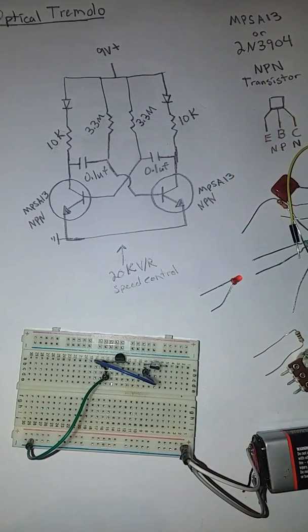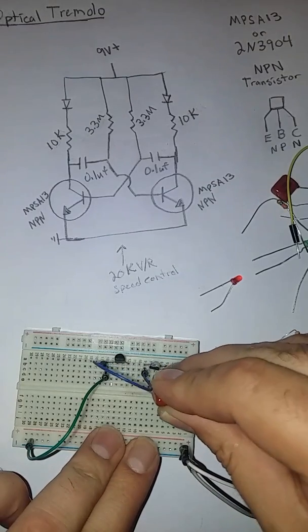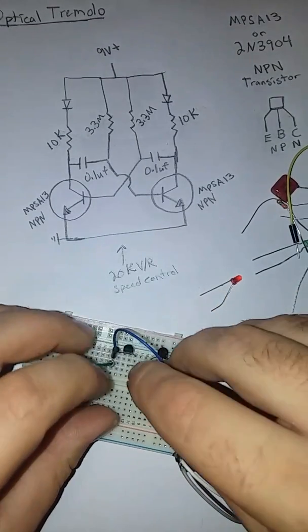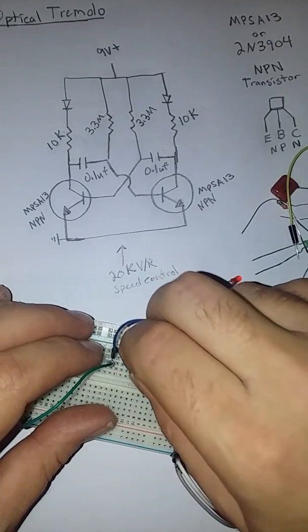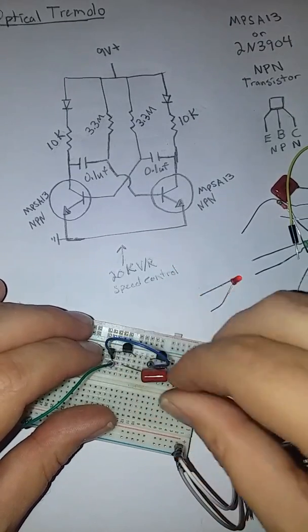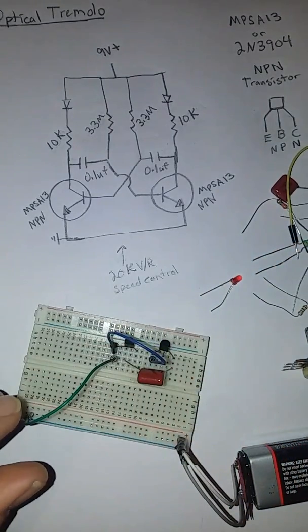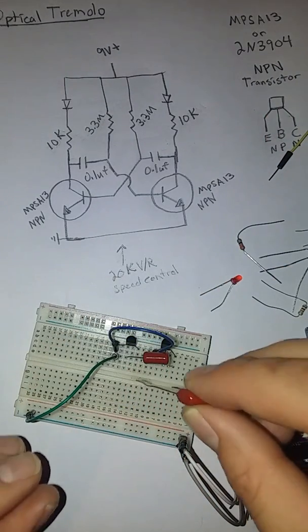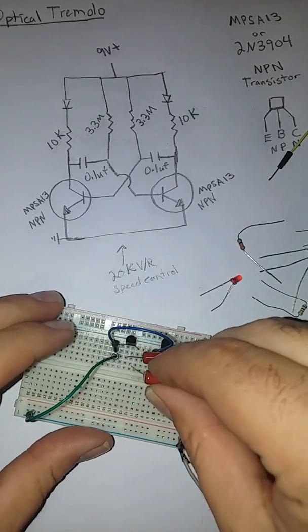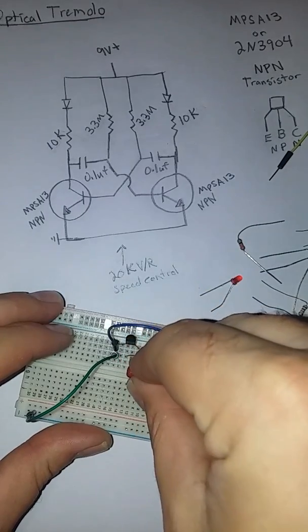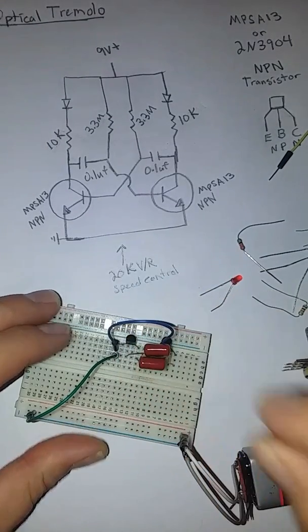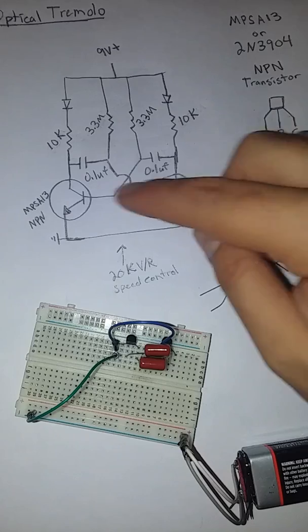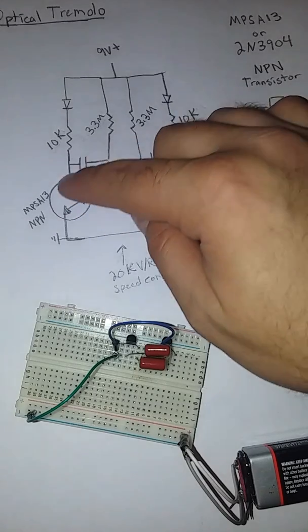So I've got my 0.1 µF capacitor. I'll go from the collector on this one to 0.1 µF capacitor to the base on this one. I'll just do the same with the other side from the collector over here to the base. And so we've got that connected from the base to the collector and the same on the other side.